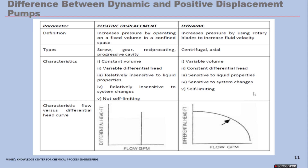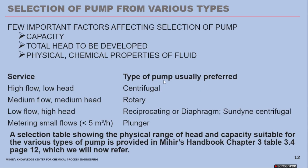The major salient points to note are: PD pumps are constant volume; centrifugal pumps are constant head. PD pumps are relatively insensitive to liquid properties, whereas centrifugal pumps are sensitive to liquid properties.